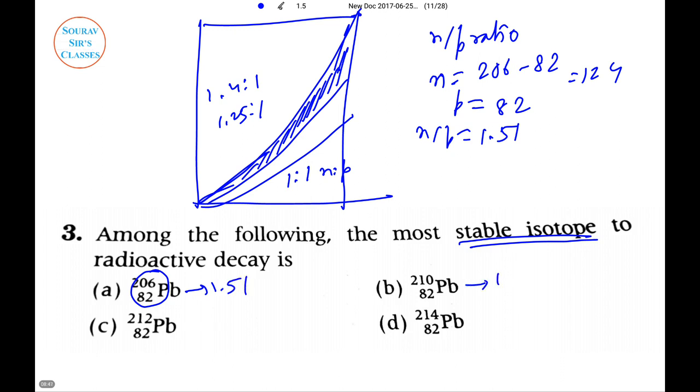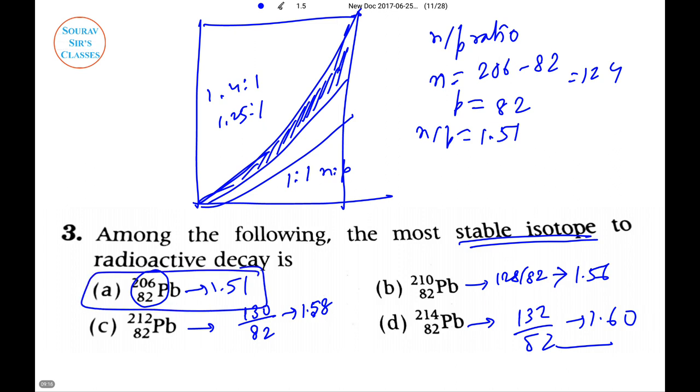In that way you can calculate all these. This will give you 128 by 82, so this will be 1.56. In this case, this lead isotope will be 130 by 82, so that is 1.58. And again this 214Pb-82 it will be 132 by 82, which is 1.60.